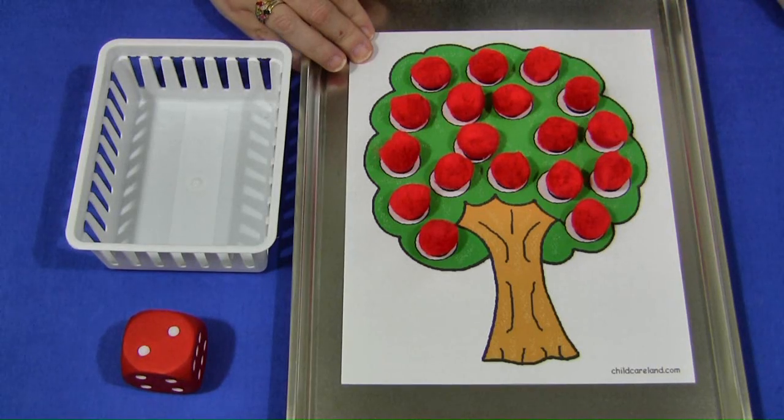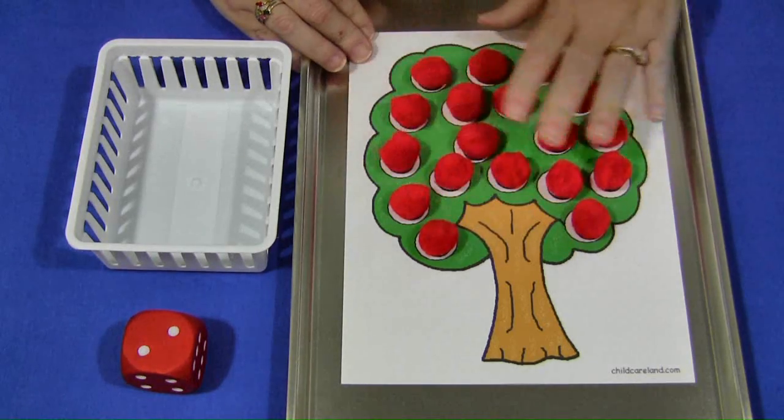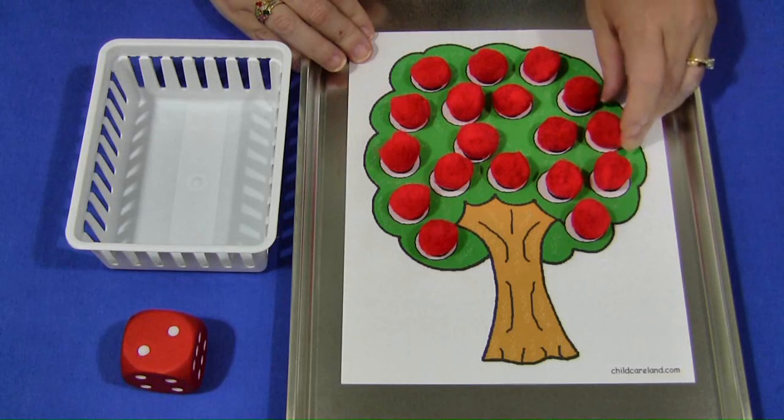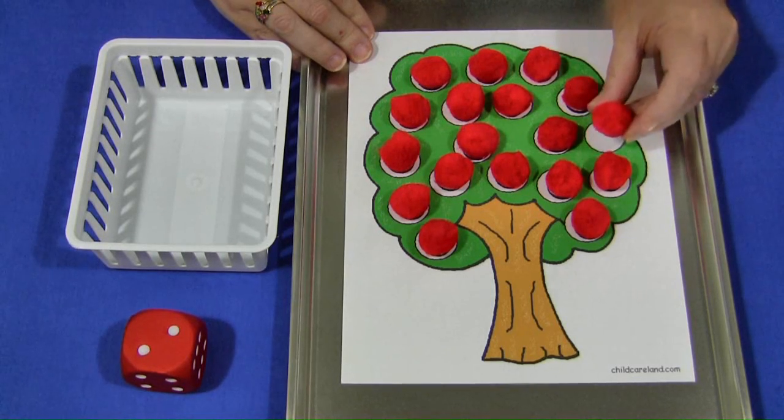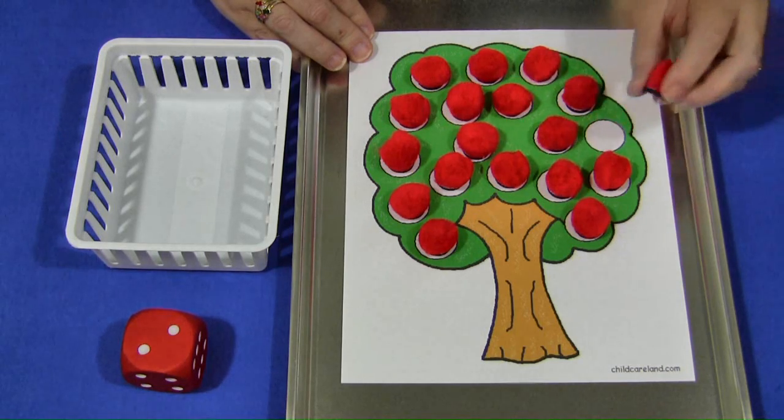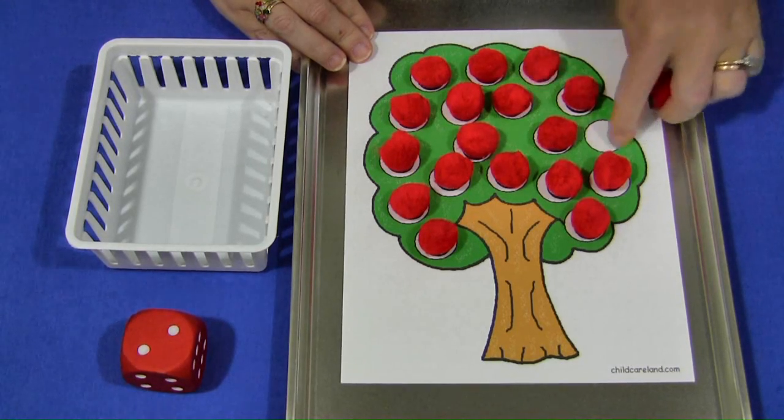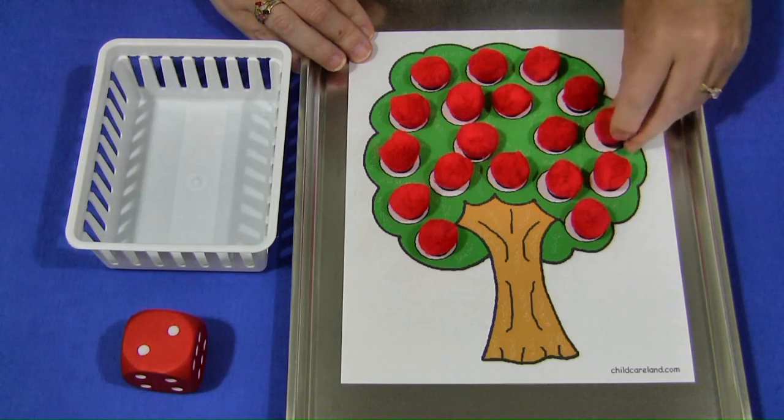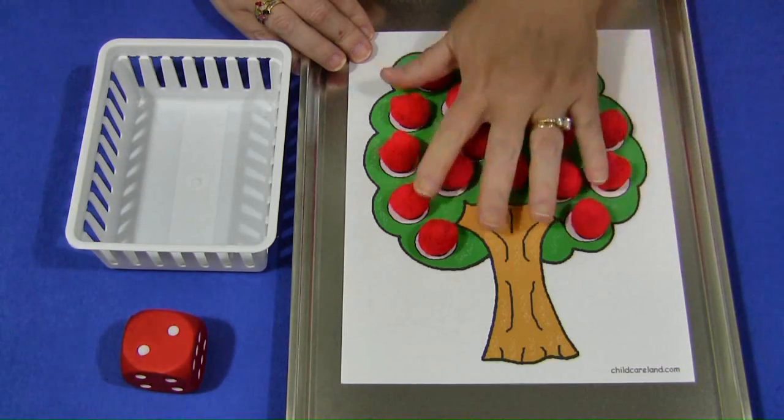So what you would do to set this up is put all the apples on here. If you don't have pom-poms or can't get a hold of red pom-poms, I've also made red markers that you can print off, cut out, and laminate, then put the self-adhesive magnets on the back. They're the same size as these circles, so they'll work well.